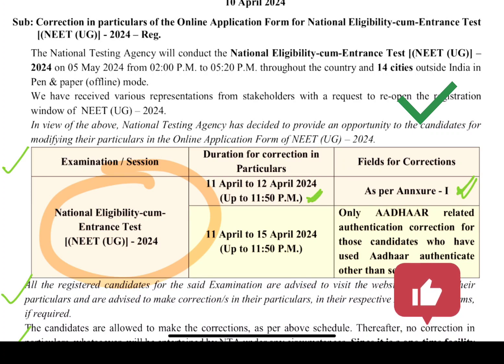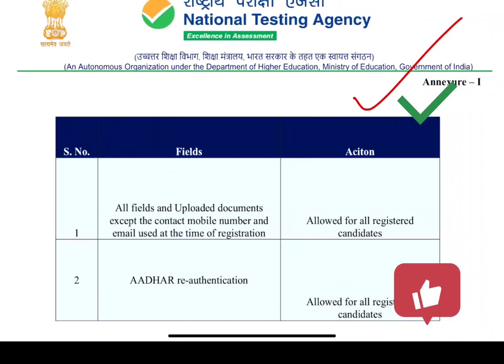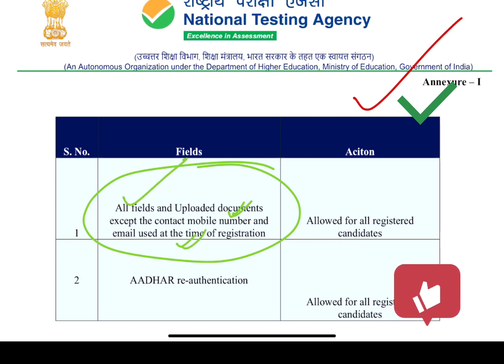First, the correction of those particulars is open on 11 and 12 April. So now you have approximately 1 to 10 hours — just complete the changes. According to Annexure 1, which has been provided here, just update your mobile number and email which you used at registration time. You cannot change other fields or documents uploaded — those remain the same. This applies to all registered candidates.